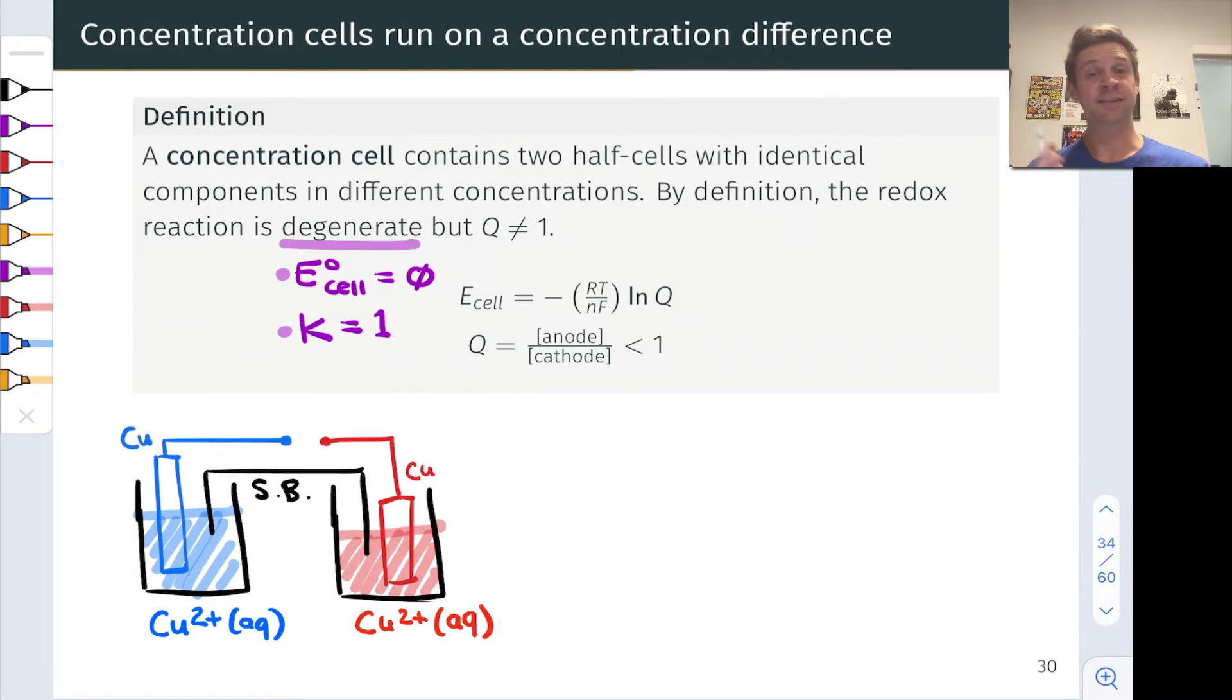In that case, the standard cell potential is equal to zero, and the value of the equilibrium constant for this redox reaction is equal to one because ΔG°, the standard free energy change for the reaction, is equal to zero. And yet, we can still get a voltage to appear across these two half cells, and we can still get current to flow from one half cell to the other. How do we do this?